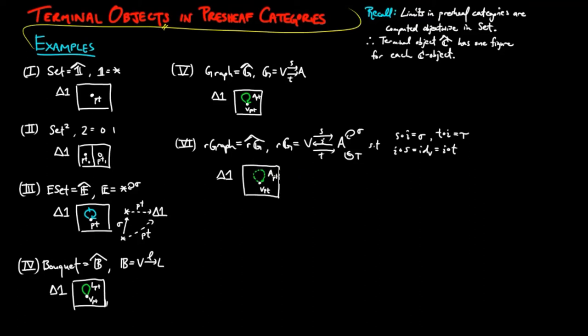Note that in each case, we have denoted the terminal object by delta one. This is because there is a diagonal functor, delta, from the category of sets to each category of presheaves, which preserves limits, in particular, the terminal object.